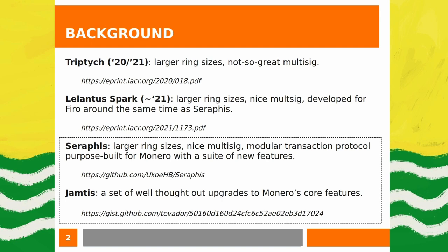That is one of Monero's core features for sender-level privacy. There has been continued research into increasing that ring size from 16 to something potentially much larger while maintaining acceptable scalability and efficiency. Triptych was one research avenue begun in 2020–2021 that found we could support larger ring sizes, but unfortunately the implementation resulted in a multi-sig user experience that wasn't great, so that effort subsided.